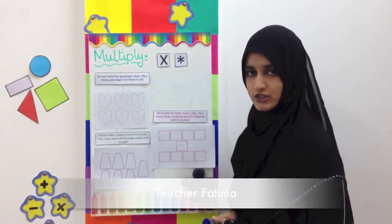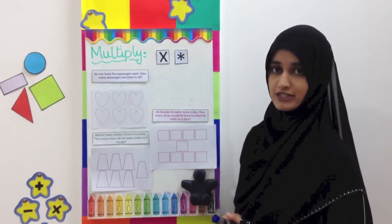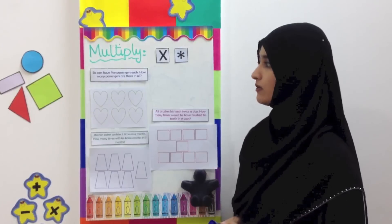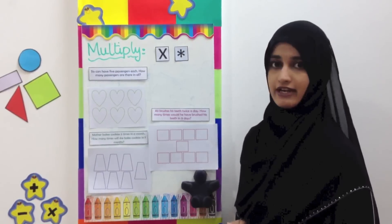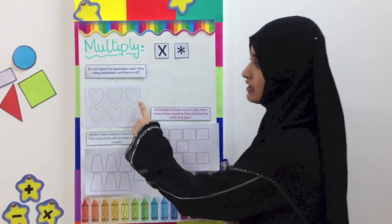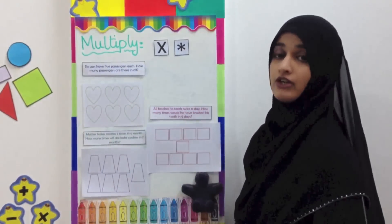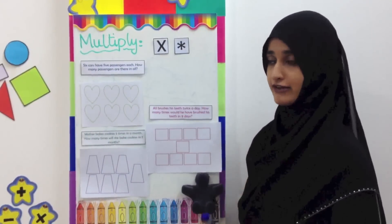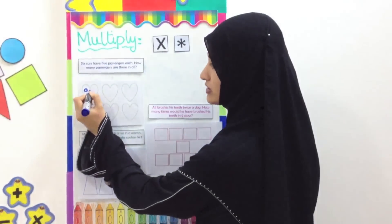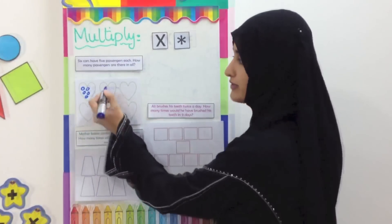We have three more questions. The first one is: six cars have five passengers each, how many passengers are there in all? You have to understand that there are six cars here. We can see there are six sets, so each set is one car, and in each car there are five passengers. So we draw five passengers: one, two, three, four, five, and you have to continue drawing all of them.